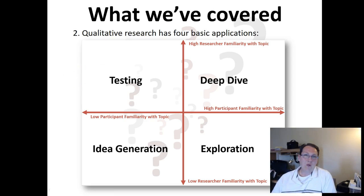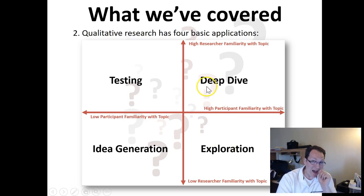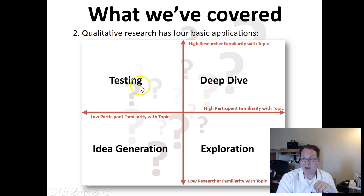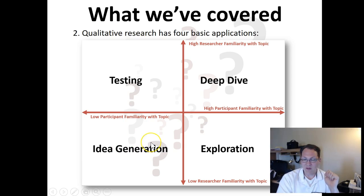Qualitative research has four basic applications, depending on how familiar the researcher and the participant are with a topic. If you have low familiarity but participants have more, you'll do exploration. If both have high familiarity, you'll do a deep dive. If participants have low familiarity and you have high familiarity, you're generally doing testing. And if both you and the participant have low familiarity, you're looking for idea generation.